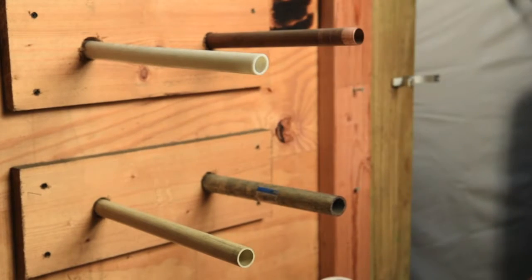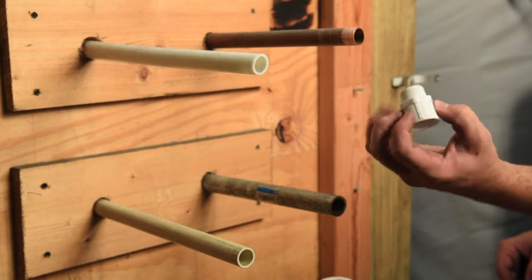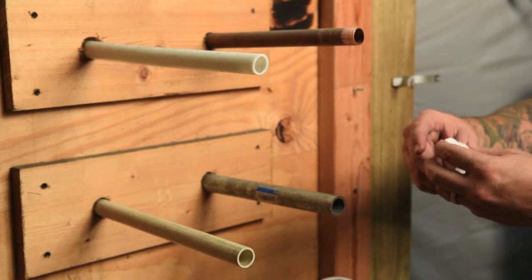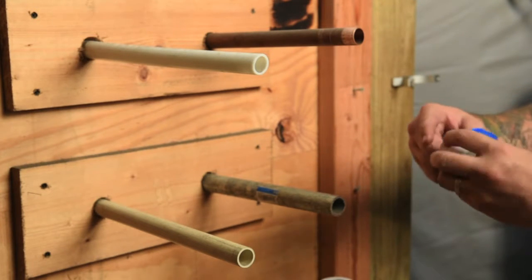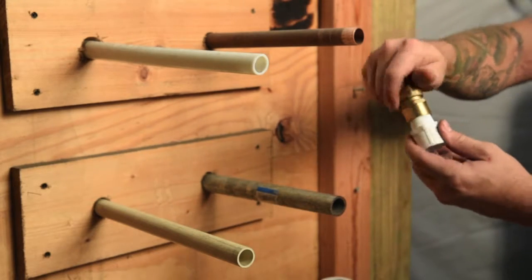Next the shark bite fitting. With one end being a female thread for a PVC adapter and the other side a compression. Wrap four to five layers of teflon tape on the adapter then thread the shark bite onto the PVC.